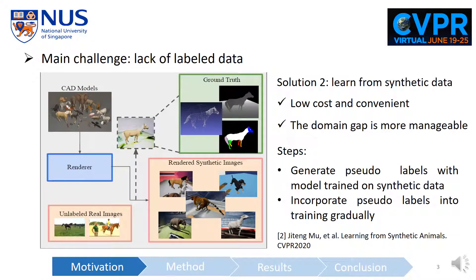The other option is to use synthetic data, which is low cost and convenient, and more importantly, the domain gap is more manageable. So the idea is to generate pseudo labels with a model trained on synthetic data, and then incorporate these pseudo labels into training gradually.